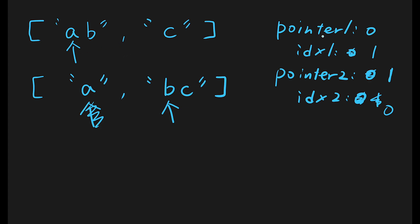Now pointer one is zero and index one is one, so we're pointing at 'b'. Pointer two is one and index two is zero, pointing at the first character of 'bc', which is also 'b'. The two characters are the same, so we update index one to two and index two to one.